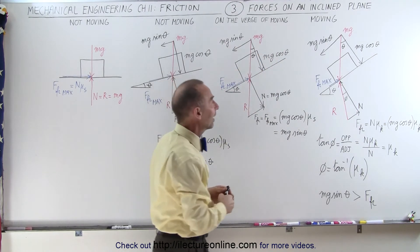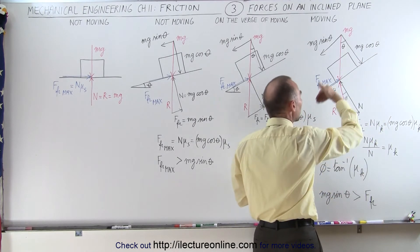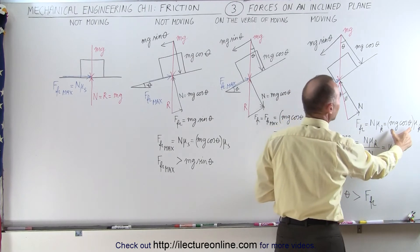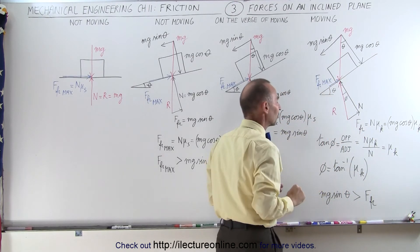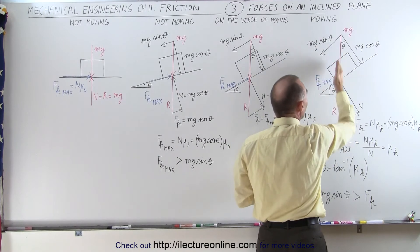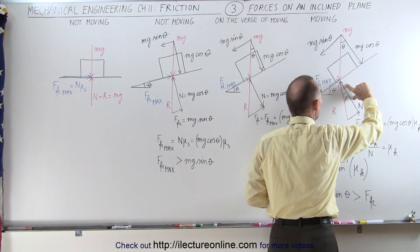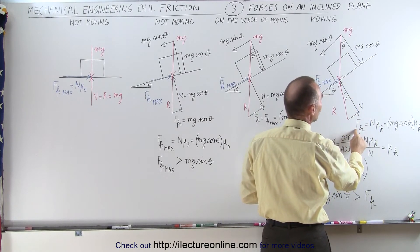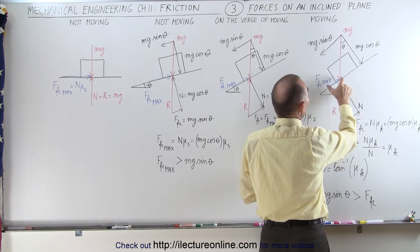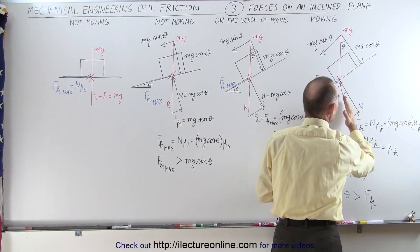Now the block is moving. We can say that mg sine theta is larger than the maximum friction force. Once the block begins to move, the friction force becomes equal to the normal force times the coefficient of kinetic friction — mg cosine theta times mu sub k instead of mu sub s. Notice that the reaction force no longer points in the same direction as the weight of the block. The reaction force is the sum of the normal force plus the actual friction force, which equals the kinetic friction force. Since this is smaller than mg sine theta, the reaction force now has an angle relative to the vertical.